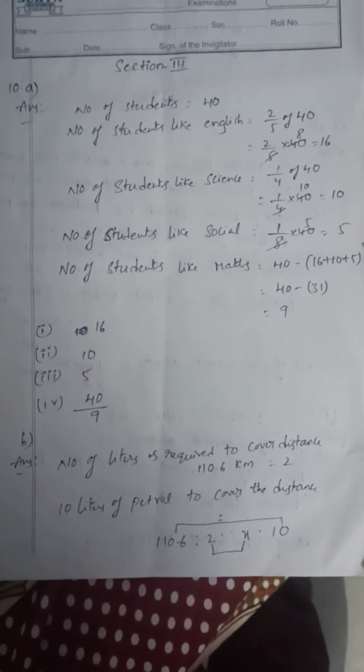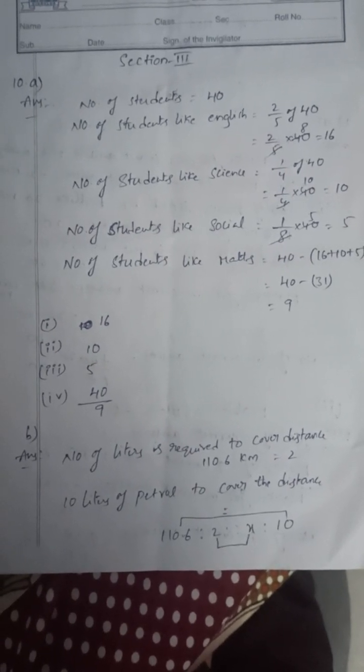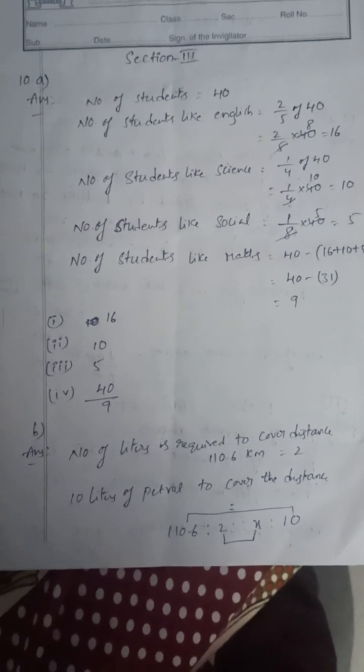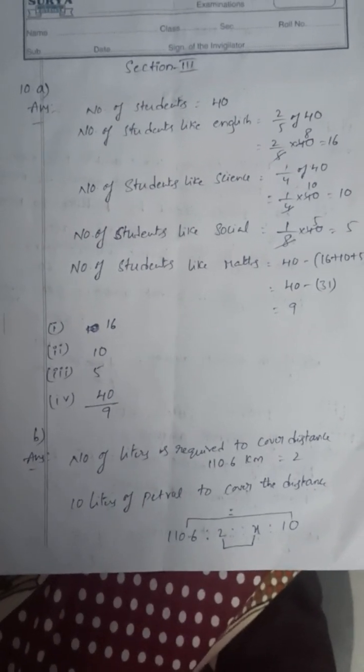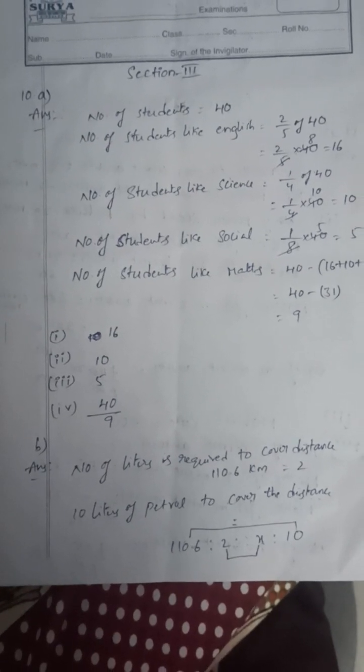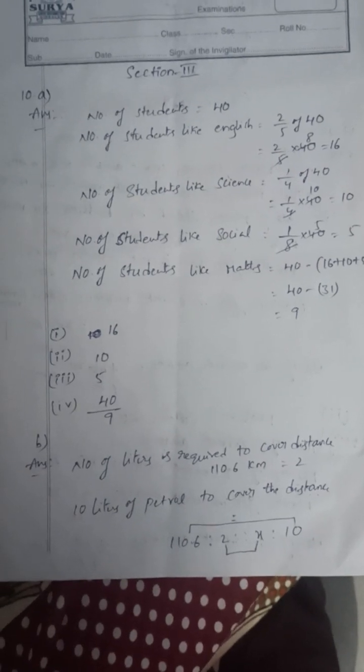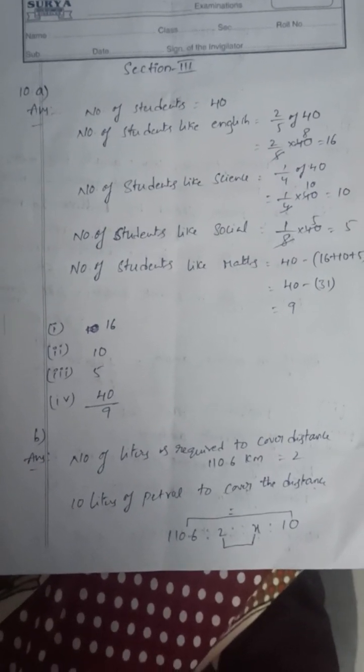Number of students who like math is 40 minus 31, where 31 is 16 plus 10 plus 5. So 40 minus 31 equals 9. Number of students in English is 16, science is 10, social is 5. Now what is the fraction of total number of students for math? That is 9/40.